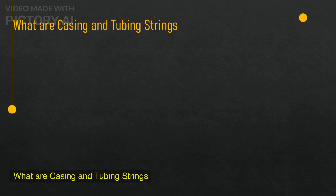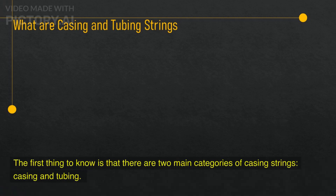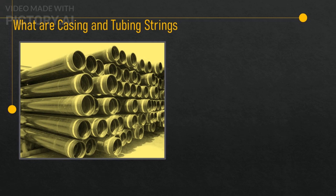What are Casing and Tubing Strings? The first thing to know is that there are two main categories of casing strings: casing and tubing. Casing is the term used for the pipe that is installed in the well during the drilling process, while tubing is the term used for the pipe that is installed in the well after the drilling is completed and the well is ready to produce fluids. Casing and tubing have different functions and specifications, and they are usually distinguished by their size and weight.